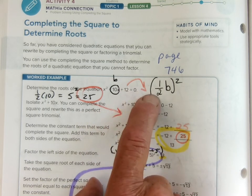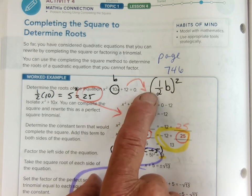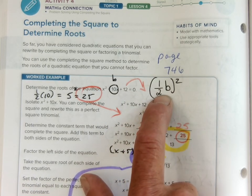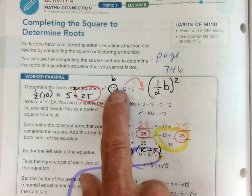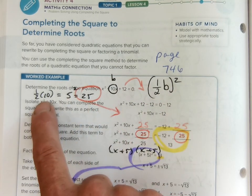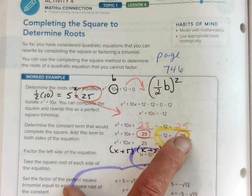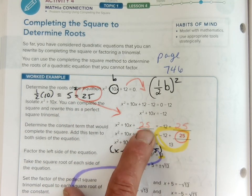First step, we got to bring the c, we got to bring the 12 to the other side. So we did that. And then you take one half of b squared. Well, b is 10. I took half of 10 is 5. I squared 5 I got 25. Now I added that to both sides. You have to add it to both sides to keep the equation balanced.